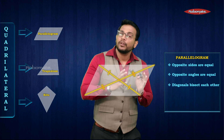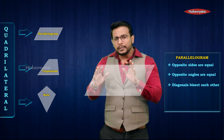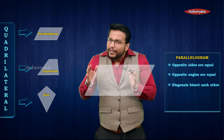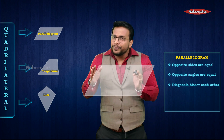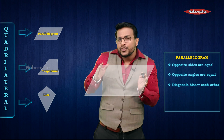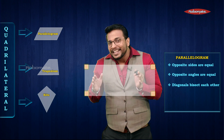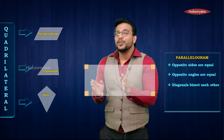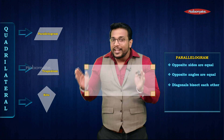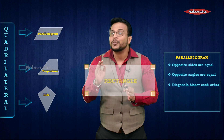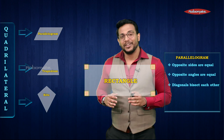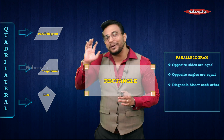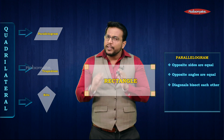Now there's something very interesting. We're going to modify this parallelogram in such a way that each angle becomes 90 degrees. The moment we get each angle at 90 degrees, you know what this becomes? It's a rectangle. So every rectangle is a parallelogram.